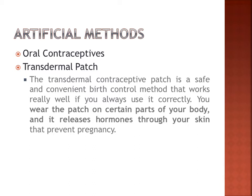In our previous presentation we discussed the natural methods. Now let's go to the artificial methods. Contrary to the natural methods, artificial methods consist of foreign objects placed inside our bodies to prevent pregnancies and sexually transmitted diseases, and can also include taking medications.